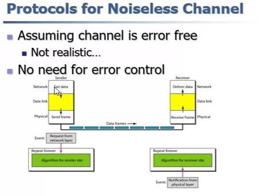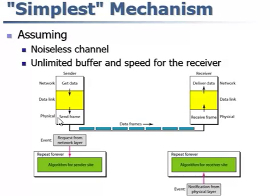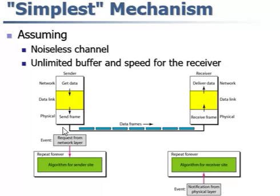The sender sends data from the network layer to the data link layer, then to the physical layer. The data is sent across, the physical layer on the receiver side receives it, then sends it to the data link layer, then to the network layer. The same data is received from sender to receiver. The only thing is there is no acknowledgement, so there are chances for error — but since it is a noiseless channel, we have assumed there will be no error.